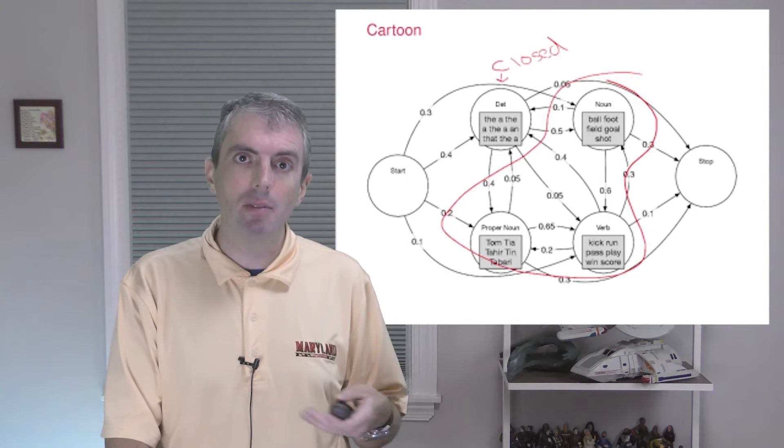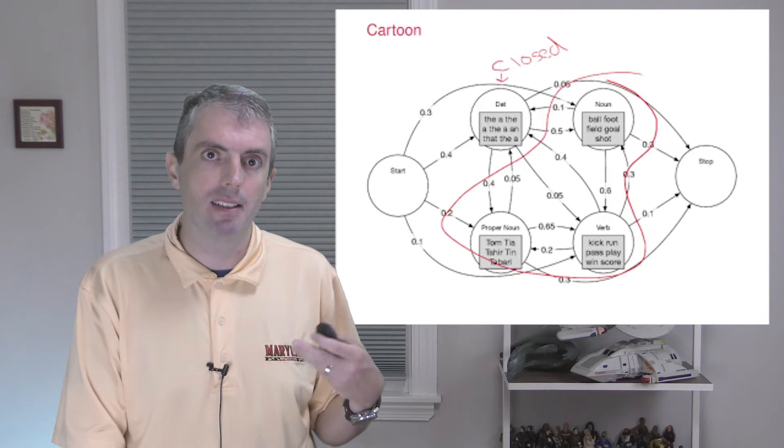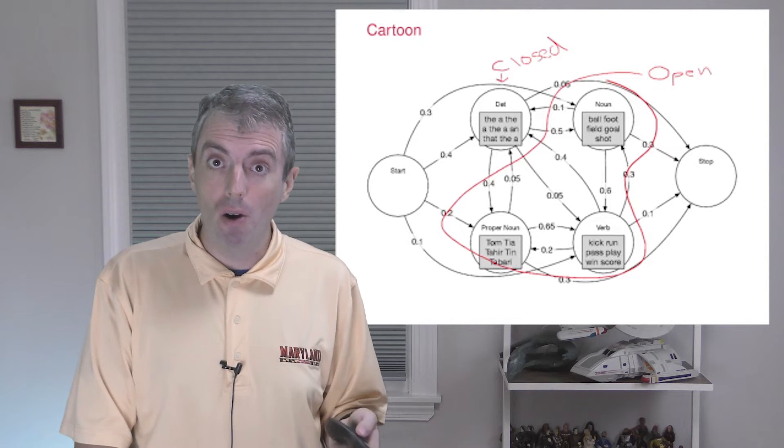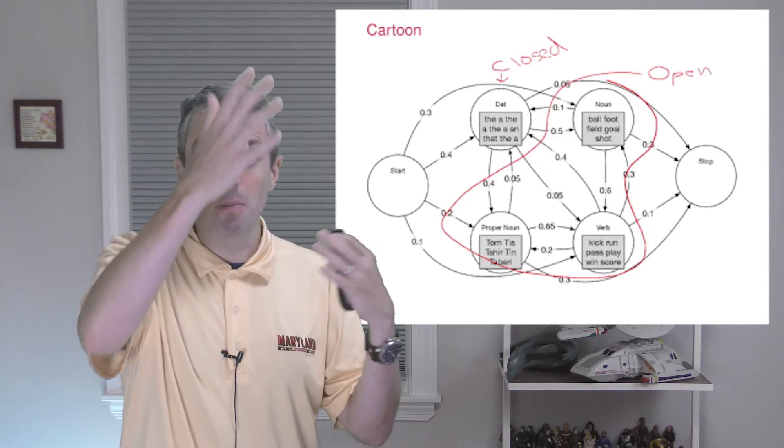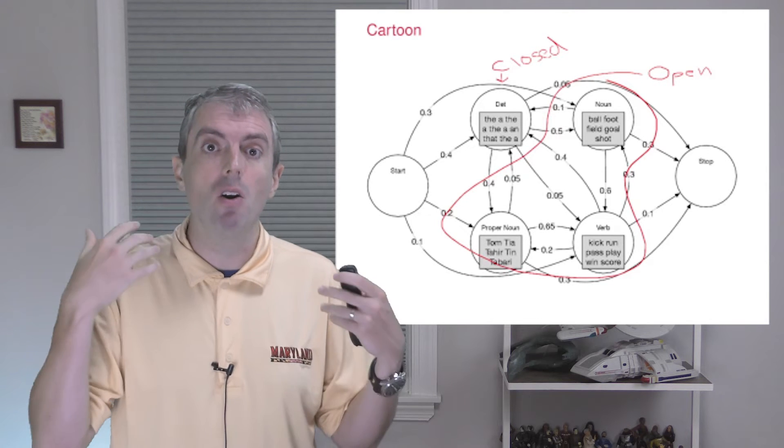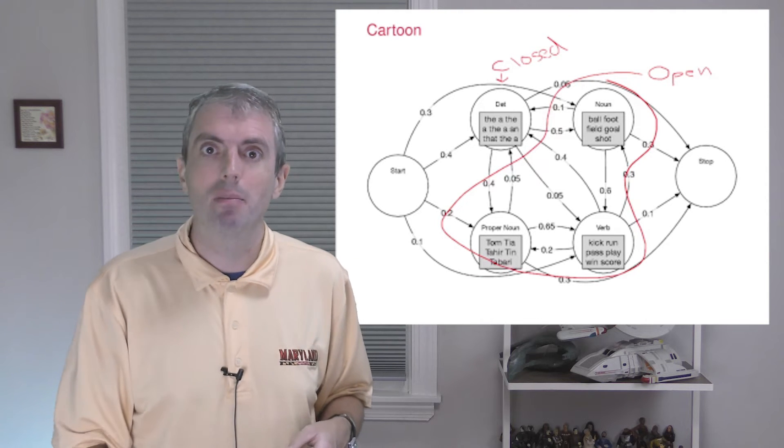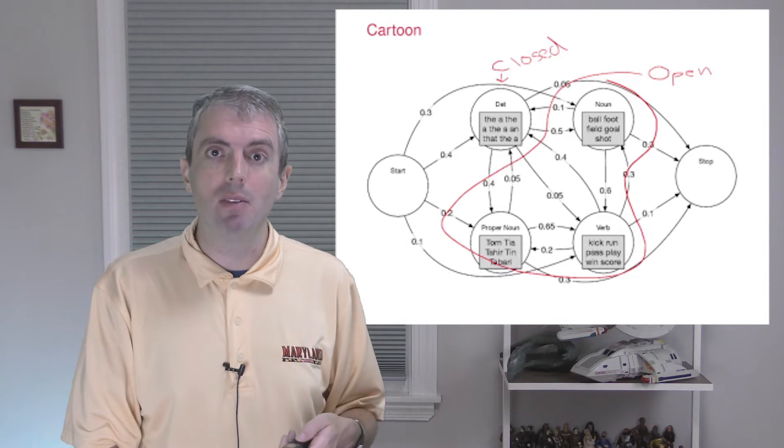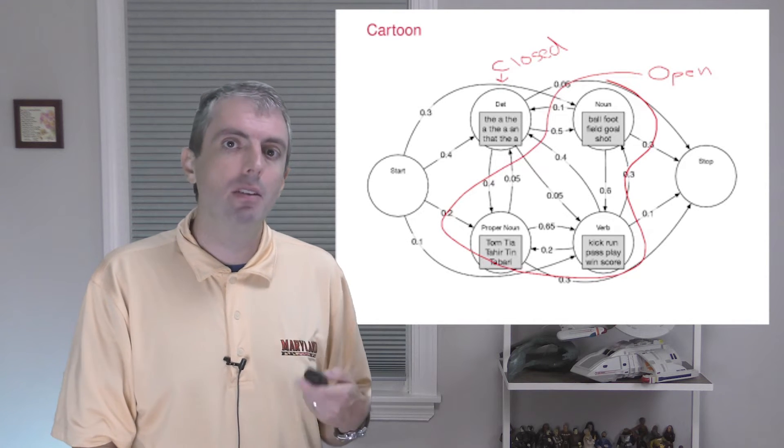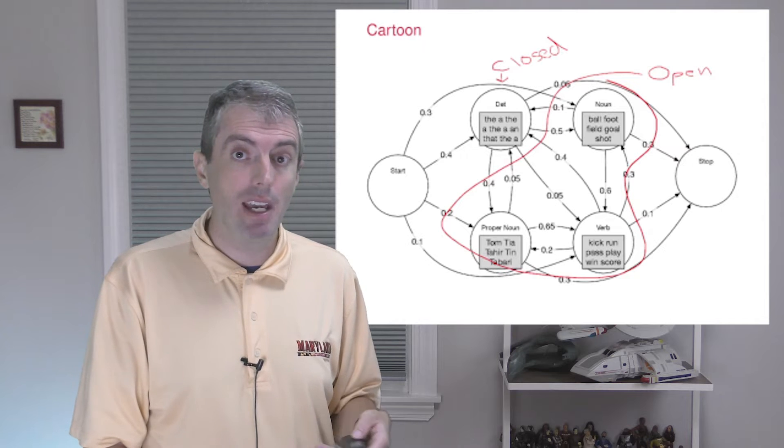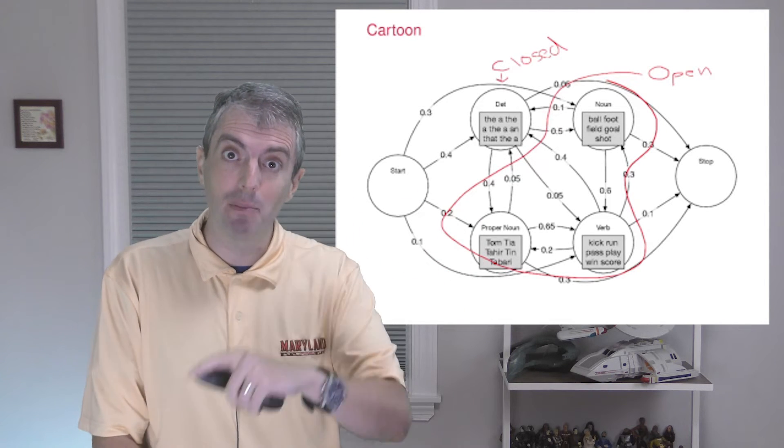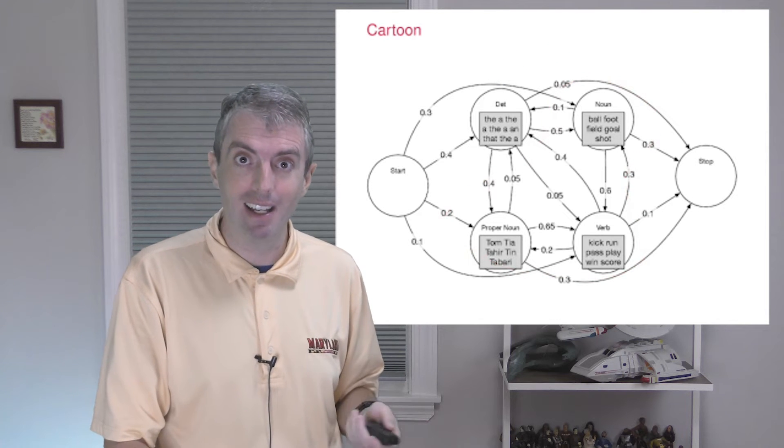Once we're in the proper noun state, we're more likely to generate words like Tom, Tia, Tahir, Tin, or Tabari. Those classes, verbs, nouns, proper nouns are open class parts of speech. Unlike other finite state machines that you might have seen with an accept state, we assume that any string that we can generate is a part of our language. The difference is that some strings have higher probability than others.